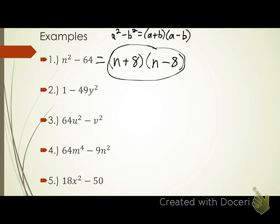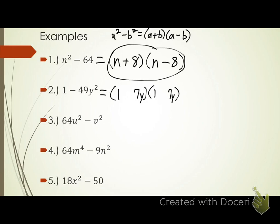Number two. Let's check and make sure it's a difference of squares. Do I have a subtraction sign between my two terms? Yes. Can I take the square root of my first term, one? What number times itself gives me one? One. Can I take the square root of 49y squared? Yeah. This is a difference of squares. What's the square root of one? One. What's the square root of 49y squared? Square root of 49 is seven, square root of y squared is y, so that gives us 7y. One's a plus, one's a minus. There's the factored form.